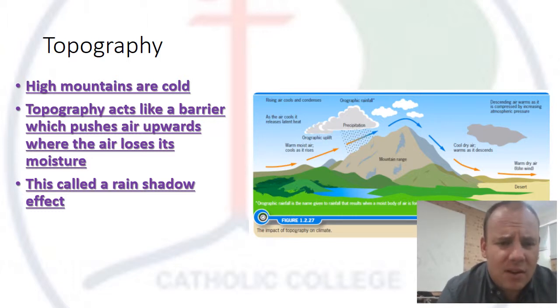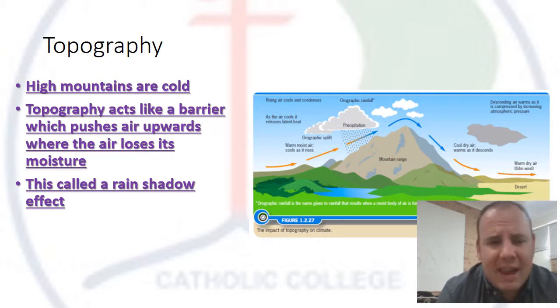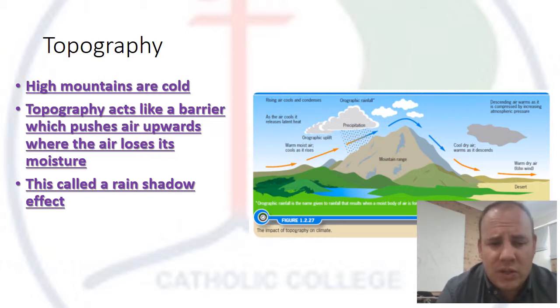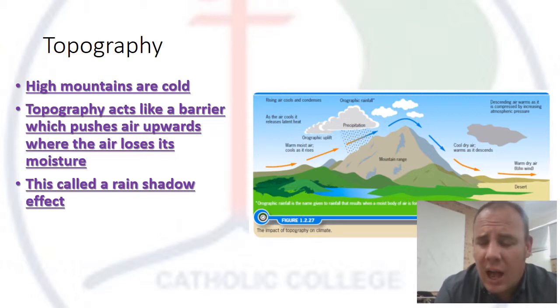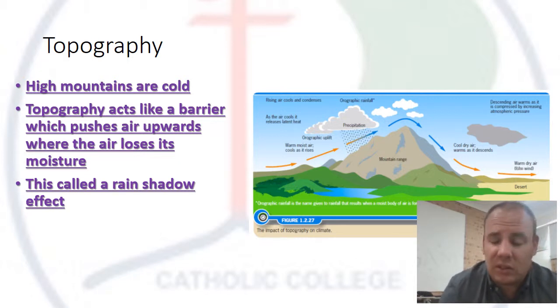Finally, there is topography. High mountains are cold, and topography acts like a barrier which pushes air upwards, causing it to lose its moisture — that's called a rain shadow. So the layout of the land also affects global climate.